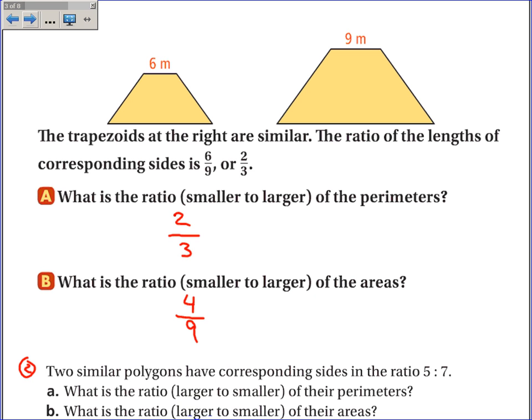Two similar polygons have corresponding sides in the ratio of 5 to 7. What is the ratio, larger to smaller, of their perimeters? We're going larger to smaller, so the ratio of the perimeters will be 7 over 5. And the ratio of the areas will be that ratio squared: 49 over 25.